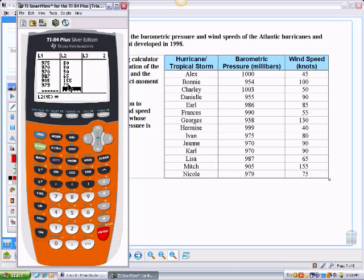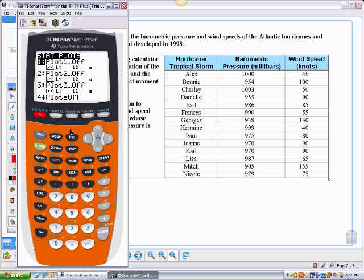Alright, good. So I've got all those in. Next thing I want to do is plot these points as x, y ordered pairs. So to do that, I go to my stat plot feature. Okay, so I go 2nd, y equals, takes me to the stat plot. And I'm going to choose plot number 1, which is currently off. So I'll press enter.